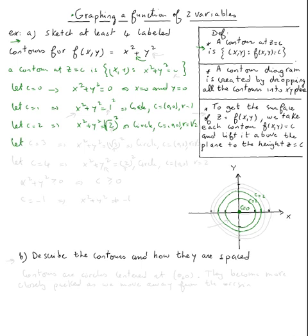If we let c = 3, we get x² + y² = 3. Three is the same as (√3)², so we get another circle with center (0, 0) and radius √3, which is approximately 1.73.